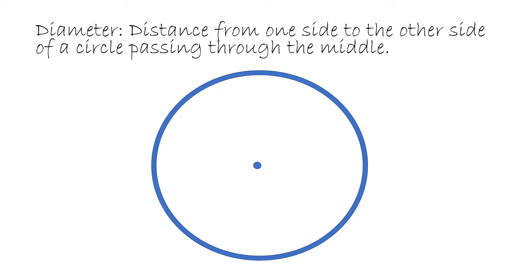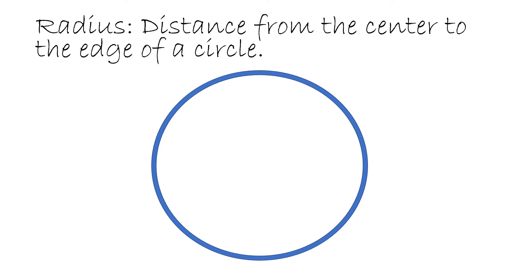Diameter is the distance from one side to the other side of the circle passing through the middle. So watch this red line carefully. You see the blue dot is the center and it goes right through the center from one edge to the other edge. This is the diameter.